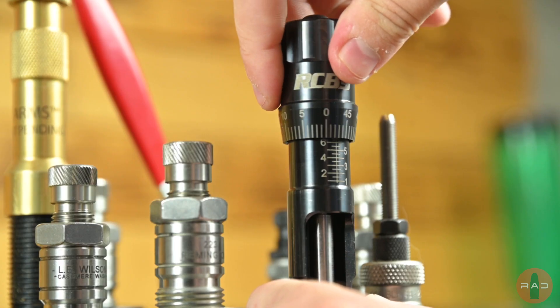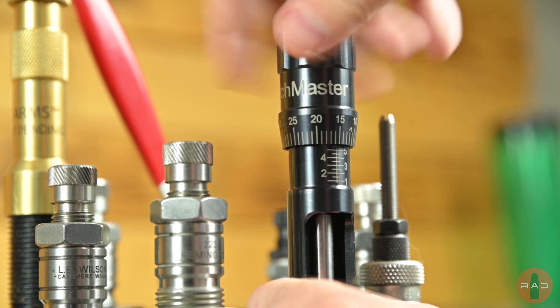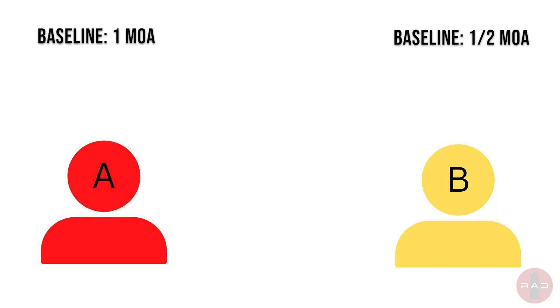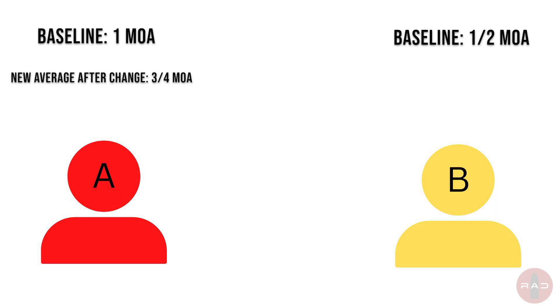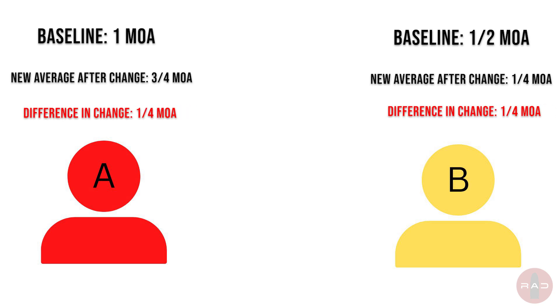Then we change one variable on the bench with our hand loads to see if we can statistically observe a change. Shooter A goes from a baseline control of one MOA on average to three-fourths MOA, and Shooter B — who is better at recoil management — goes from half MOA on average to one-fourth MOA. Both shooters are still yielding the same results from the test because they both yielded a one-fourth MOA change from the baseline after changing one variable. But can we factually say that one variable we changed truly caused the outcome? Not necessarily. For example, if we change seating depth, is it truly the timing that is squeezing in our groups? Or is it actually something entirely different that yielded those results? This is type 1 and type 2 errors in statistics.